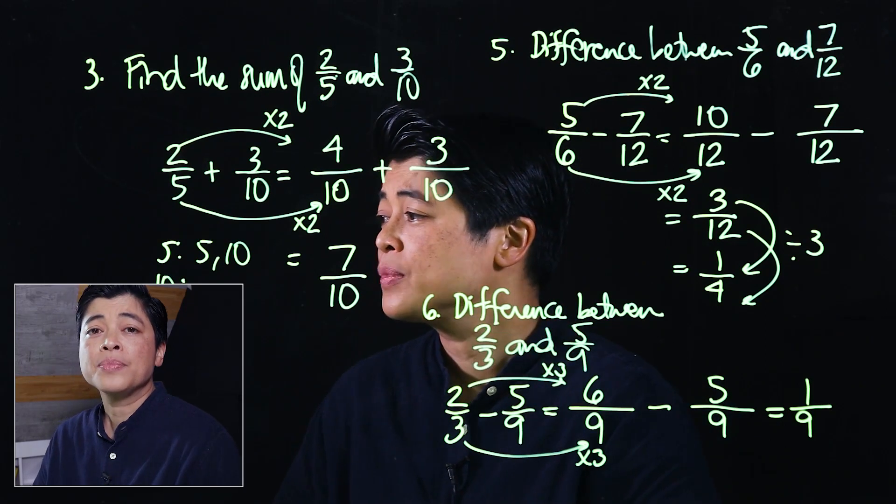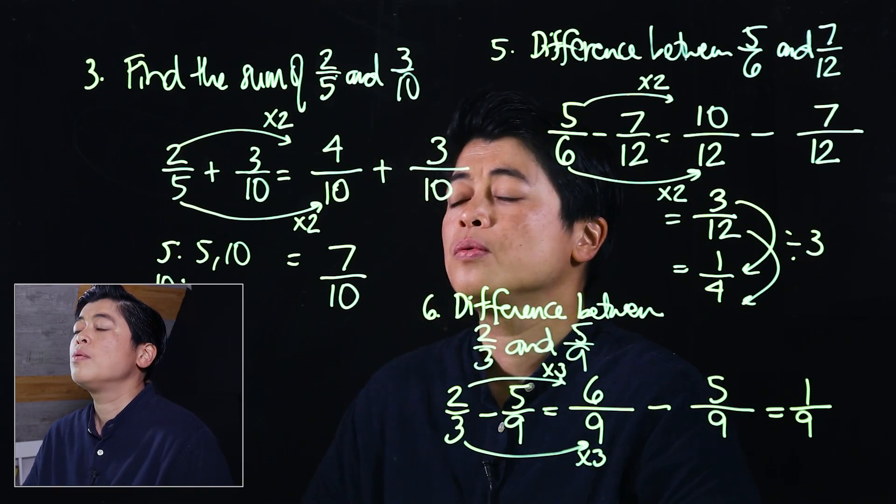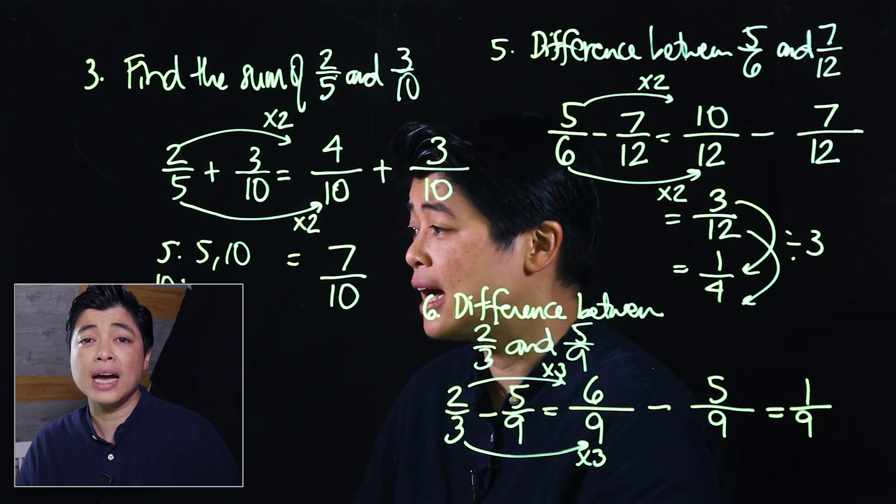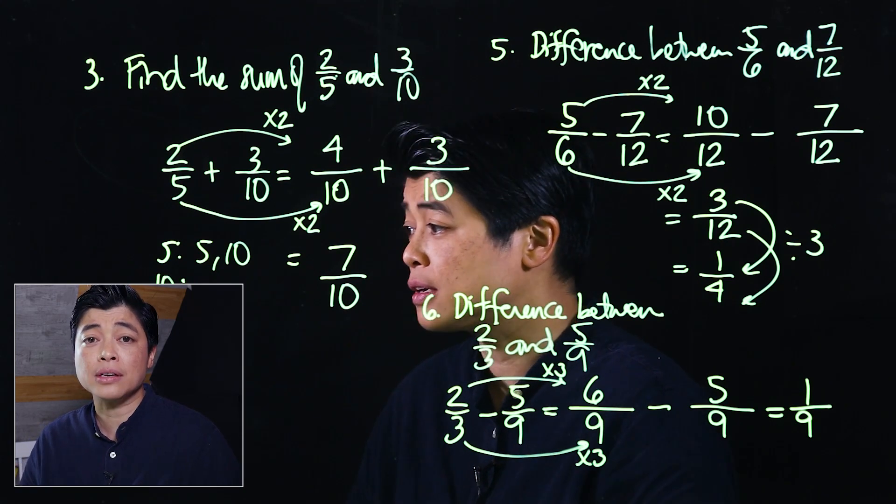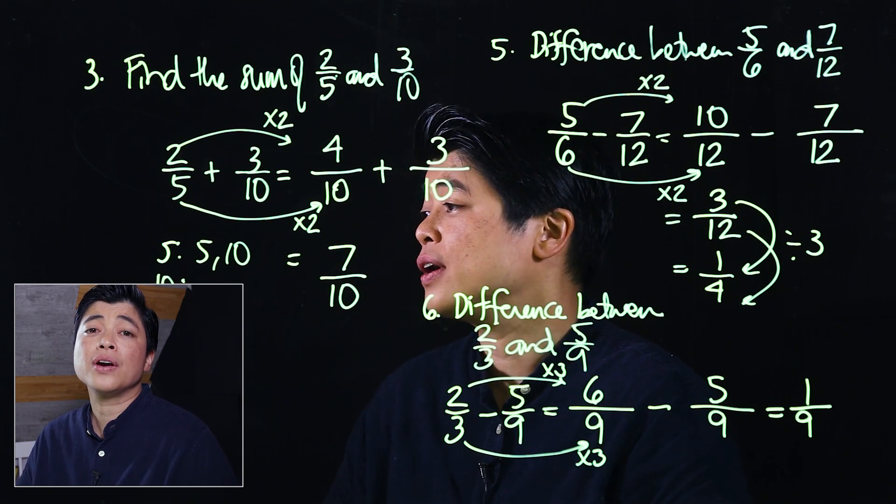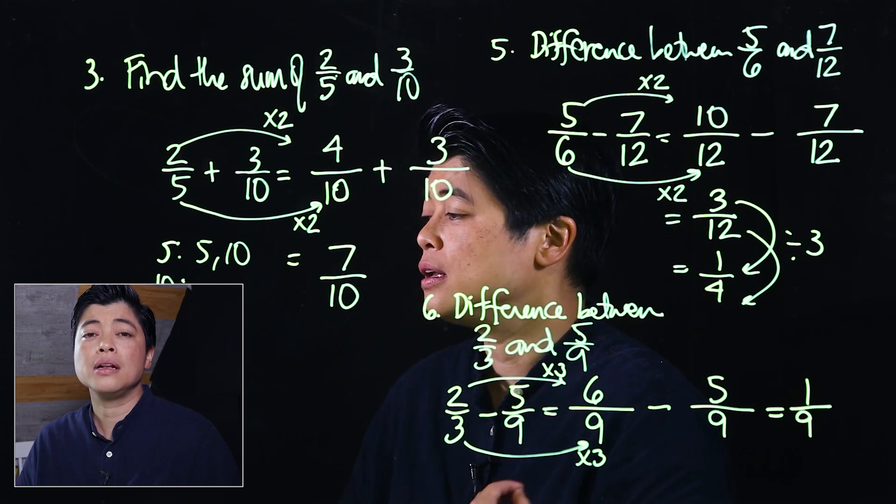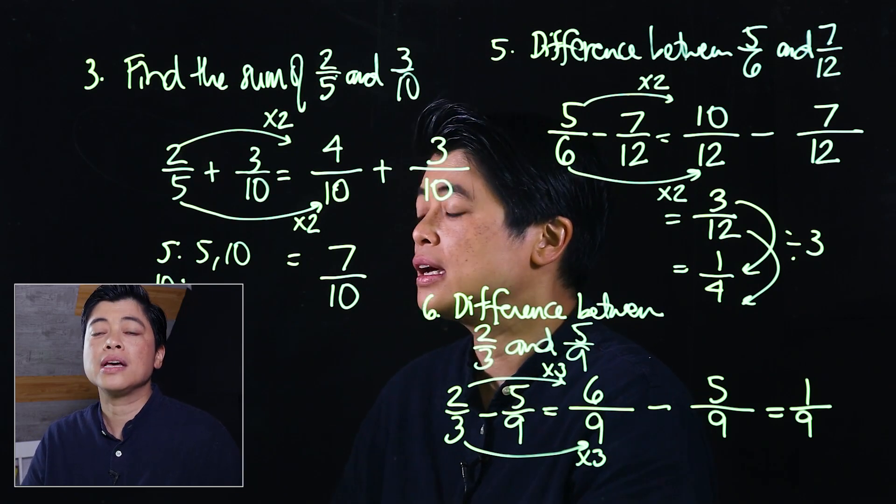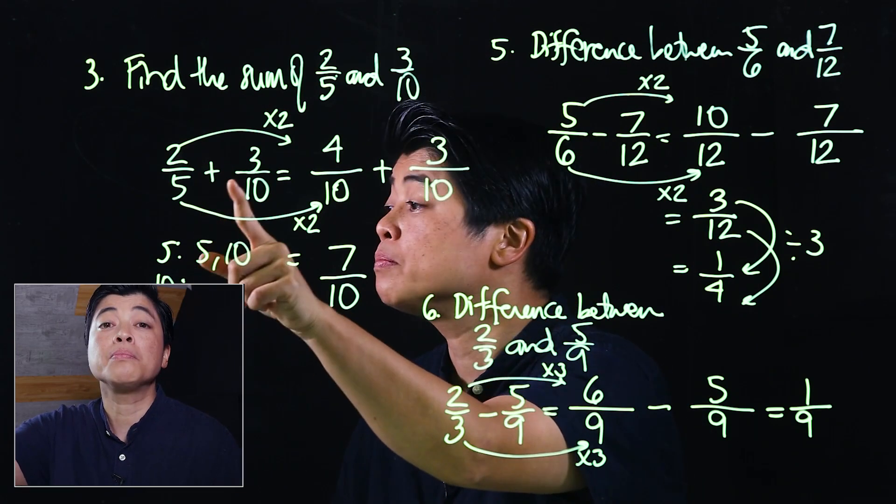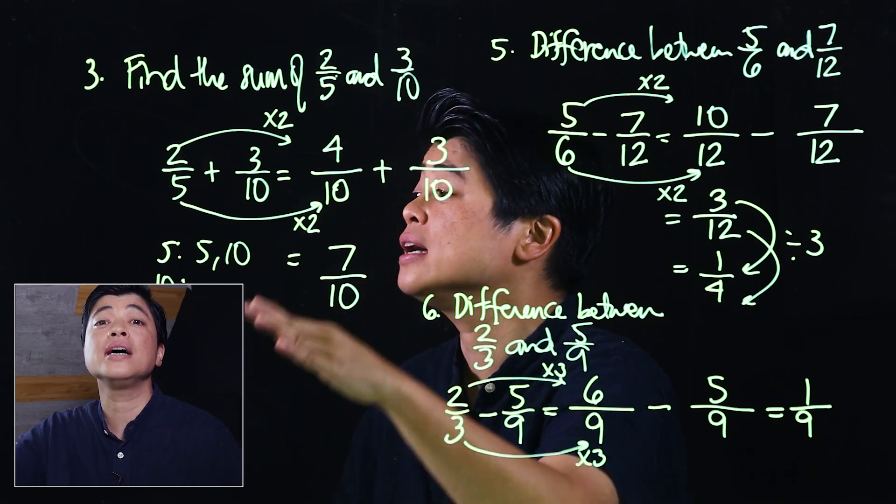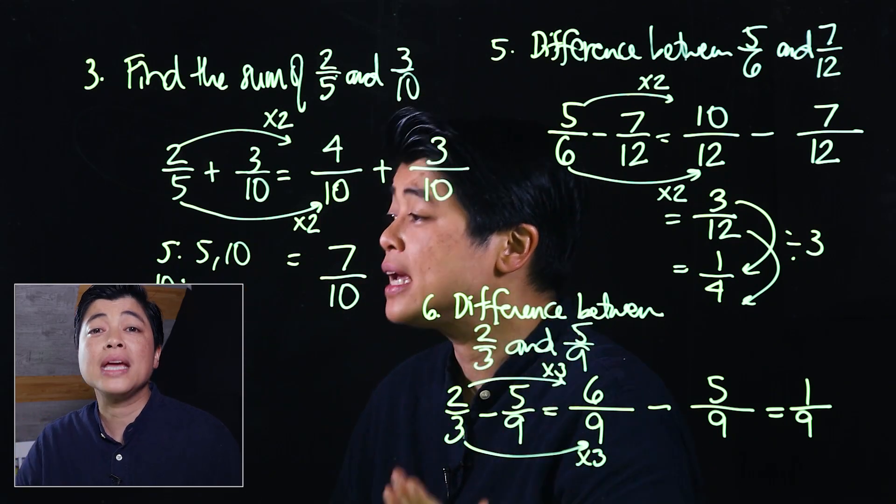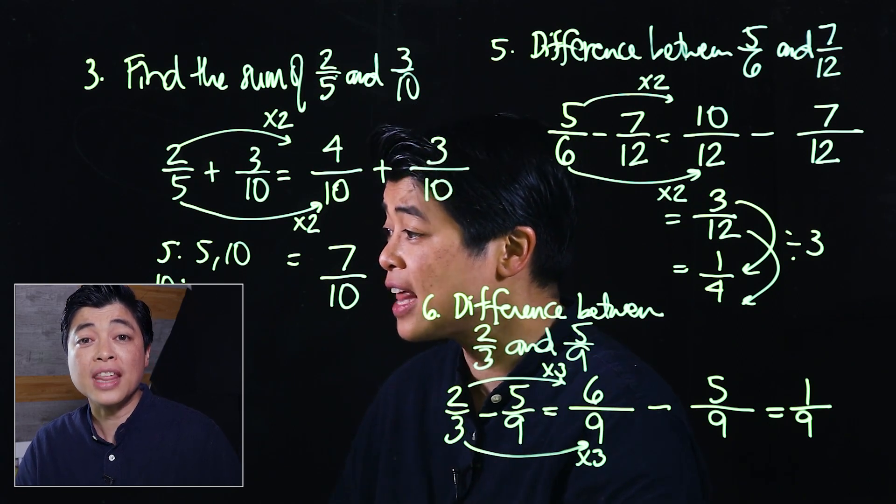When we are adding or subtracting fractions, they must have the same denominator. If it's hard for the kids to come up with a lowest common denominator mentally, have them list the multiplication tables of the denominator. That will make it less stressful for them.